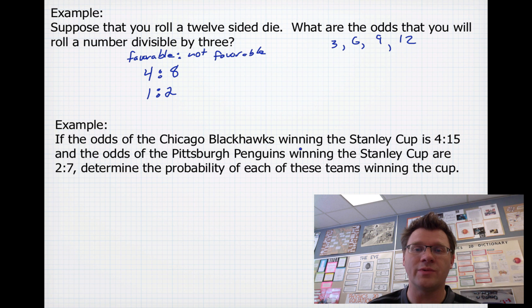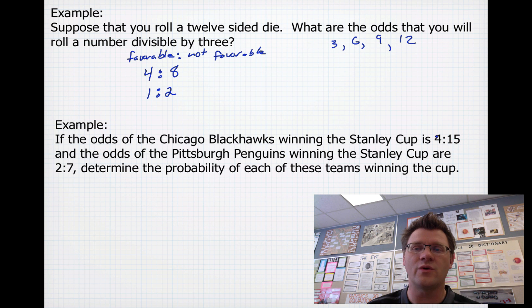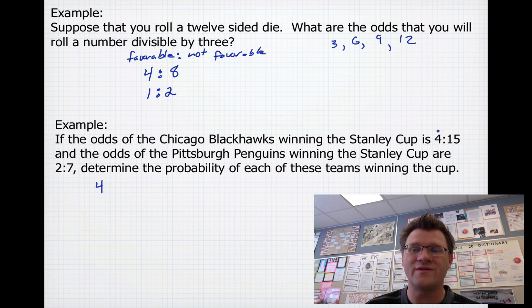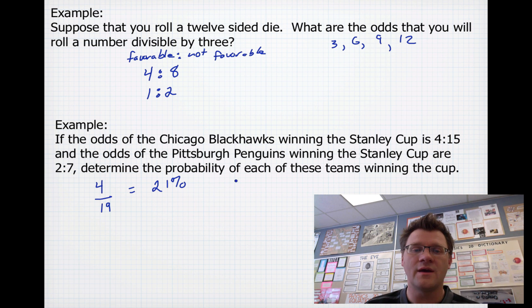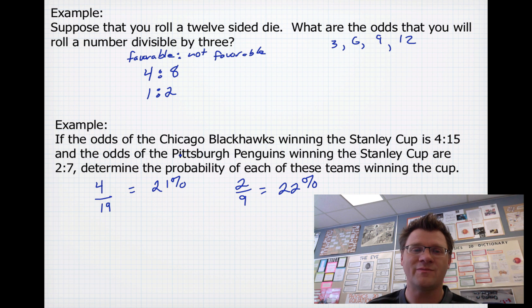If the odds of the Chicago Blackhawks winning the Stanley Cup are 4 to 15, and the odds of the Pittsburgh Penguins winning are 2 to 7, determine the probability of each team winning. For the Blackhawks, that's 4 out of a total of 19 — you add the two parts together — giving a probability of 4 over 19, which is about 21%. For the Penguins, 2 to 7 means 2 out of 9, which is about 22%. So the odds-givers in Las Vegas have determined the Pittsburgh Penguins have a slightly better chance of winning the Stanley Cup than the Chicago Blackhawks.